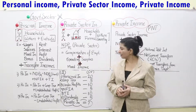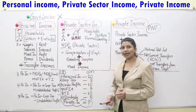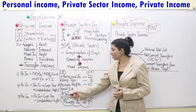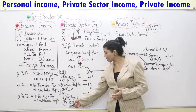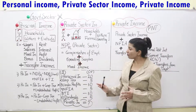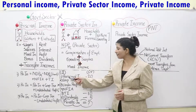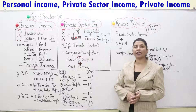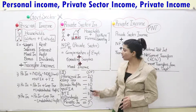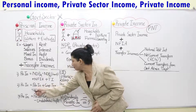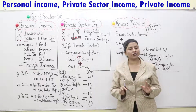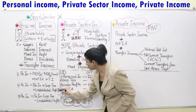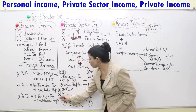Now we have a second numerical. Here we are given: personal income, corporate profit tax or corporation tax, undistributed profits, net factor income from abroad, transfer income, and dividends. We need to calculate private income. We only need three components: personal income, undistributed profits, and corporate tax. We don't require net factor income from abroad, transfer incomes of any type, or dividends separately — because all of these are already included in your personal income.